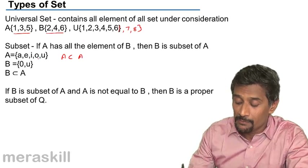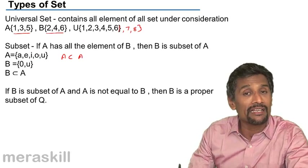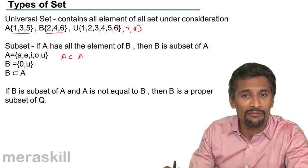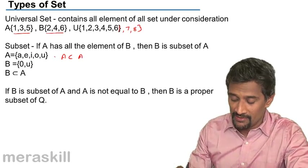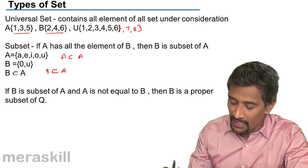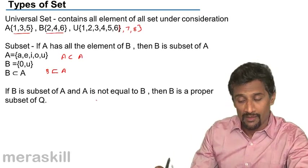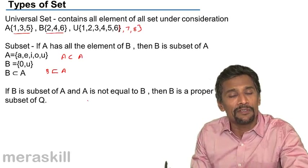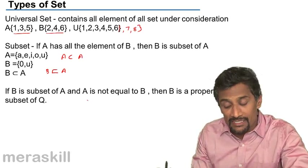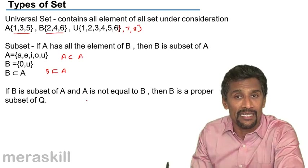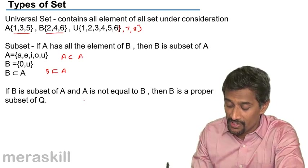If A has all the elements of B, then B is a subset of A. Every set is a subset of itself. Suppose two sets are equal — meaning they have the same elements — then both of them are subsets of each other. So the set itself is a subset of itself, and when two sets are equal, they are subsets of each other.